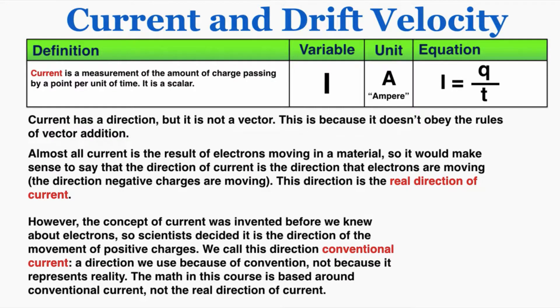Current has a direction, but it is not a vector. This is because it doesn't obey the rules of vector addition, so you can't really use trig or triangle math or anything like that or connecting the tip to tail to understand current. So because it doesn't work that way, we say that it's not really a vector.